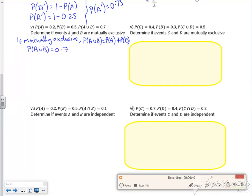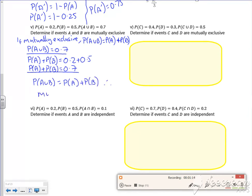So I've got an answer there and an answer there. So probability of A or B equals A and B, therefore they are mutually exclusive.